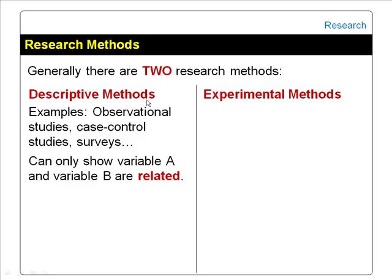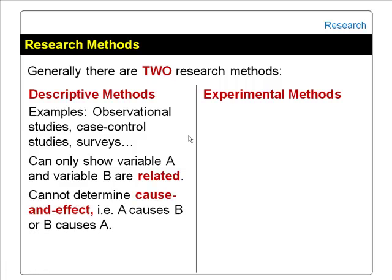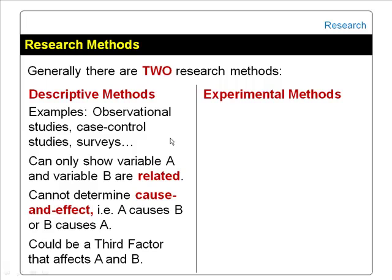The limitation of the descriptive method is that it can only show that variable A and variable B are related or associated. It cannot determine cause and effect — it cannot determine whether changes in A are due to B, or changes in B are due to A. You must understand that association is not causation. It could also be due to a third factor, an extraneous variable, that is not considered in the study.